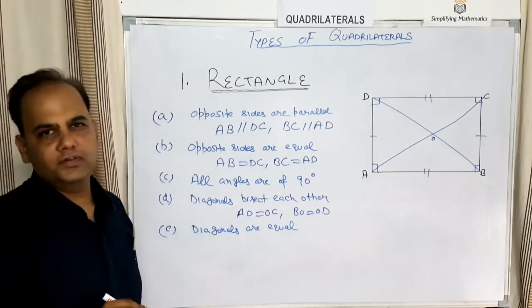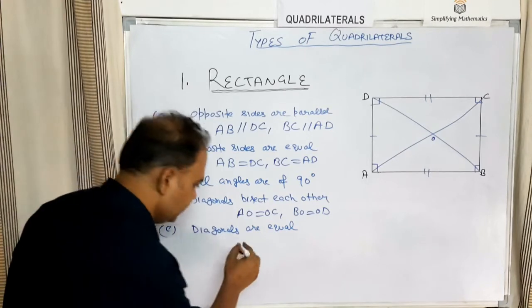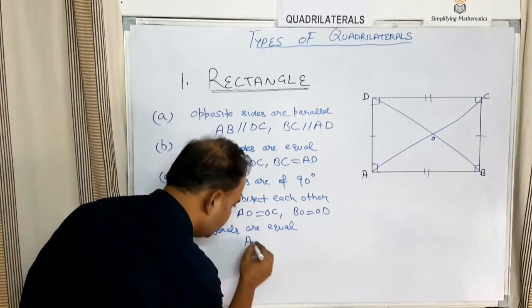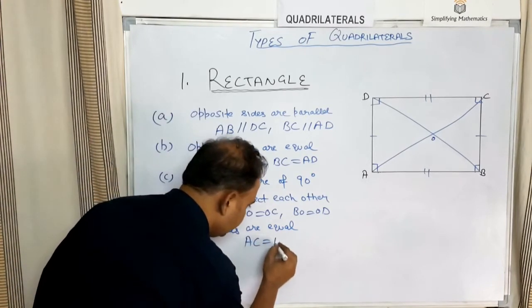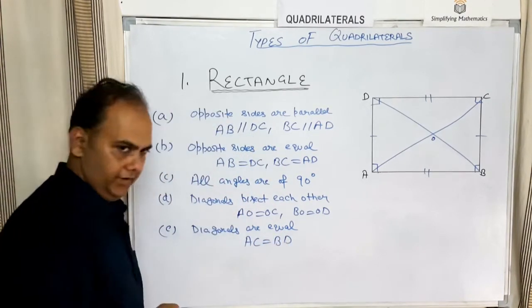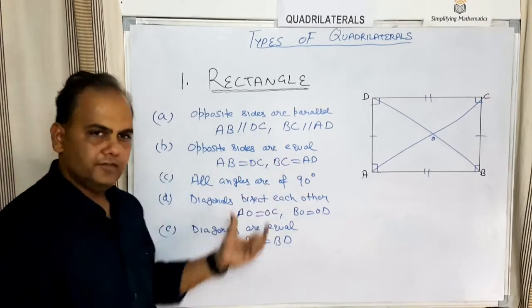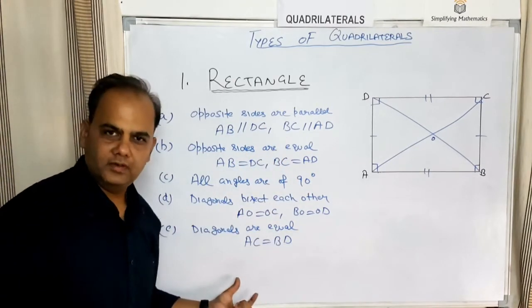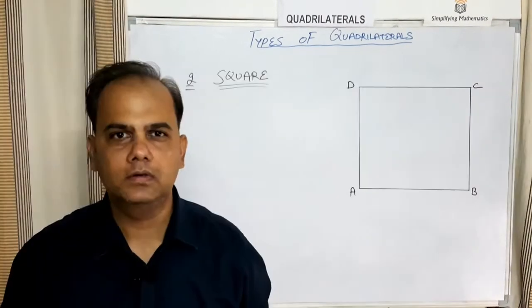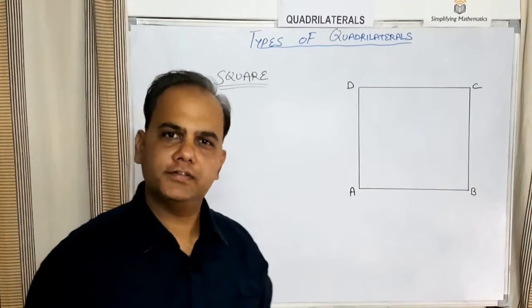The fifth property of a rectangle is that the diagonals are equal, meaning AC equals BD. These are the five properties of a rectangle.